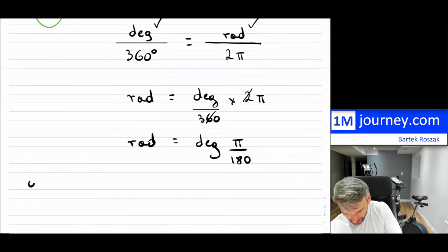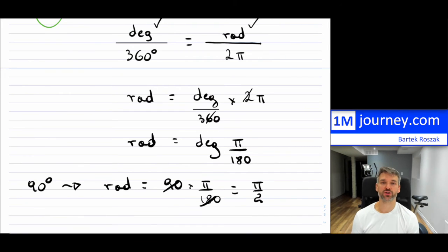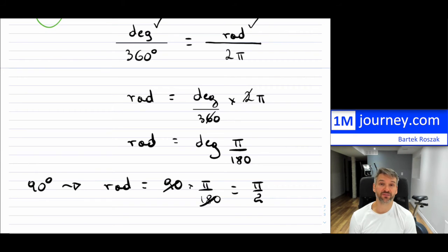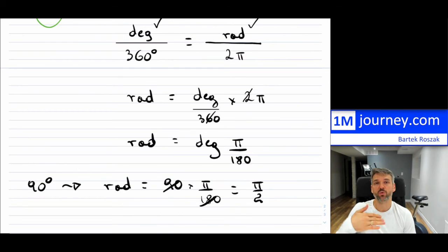That shouldn't surprise you, because 90 degrees is a quarter of a circle. If the whole circle is 2π, then a quarter is π over 2. Some of these you can know very quickly: 180 degrees is half a circle, so that's just π. 360 degrees is 2π. 270 degrees is three quarters of a circle — take 270 times π over 180 — and you get 3π over 2. You can do that with anything.